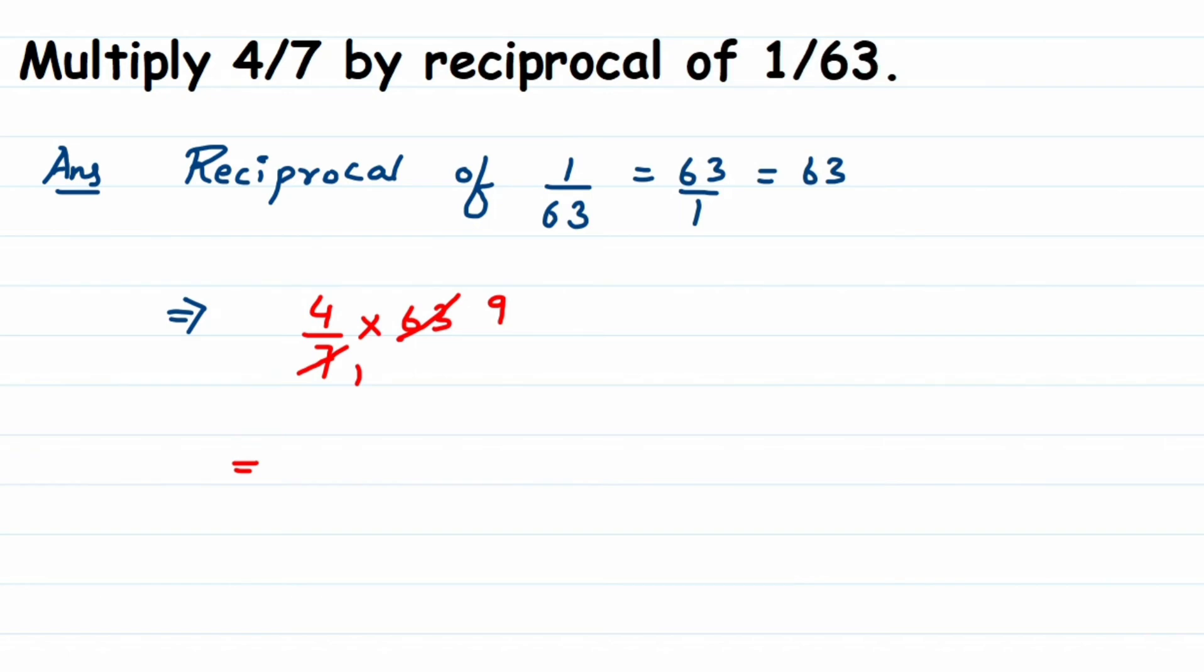We cannot cancel anything further, so just multiply the numerators. 4 into 9 is 36. So this is the answer for this problem. That's it, we got the solution.